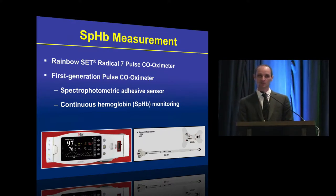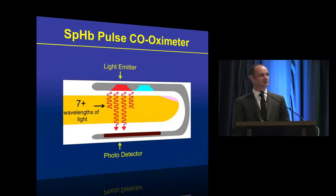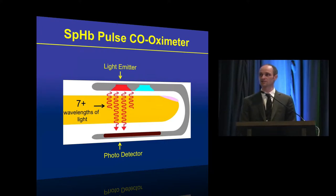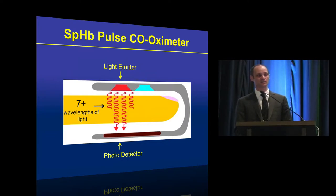How does the sensor work? Embedded in the sensor is a light emitter which sends out more than seven different wavelengths of light. After accounting for absorption within pulsatile and non-pulsatile tissue, any light that gets through is detected at the level of the photodetector. Then using a proprietary algorithm embedded in the processor within the device, it computes the hemoglobin concentration non-invasively.